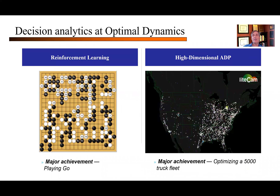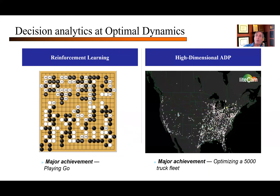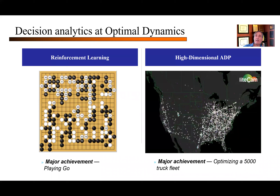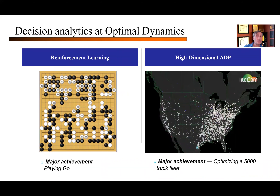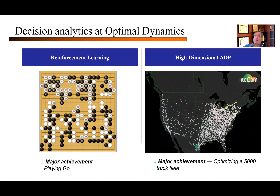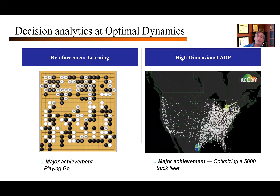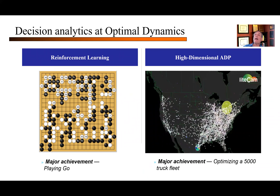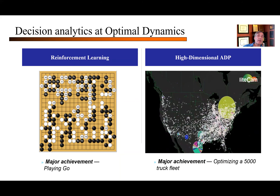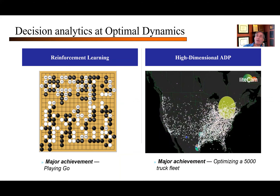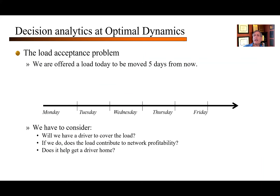These are the results of running this learning on 11 different companies — work done by Optimal Dynamics. We see a general trend of improvement: we got improvements anywhere from 15 to 40%. The base iteration one uses value functions of zero — that's exactly what a number of commercial optimization packages do, optimizing assigning drivers to loads without a value function for the future. The computer science community has gotten a lot of press using reinforcement learning to optimize the game of Go, which is viewed as a major achievement. But we've been able to use advanced decision analytics techniques to optimize fleet management with 5,000 trucks, modeling every driver individually — their hours of service — optimizing which drivers get the best load, not only thinking about what to do now but the impact on the future through value functions.